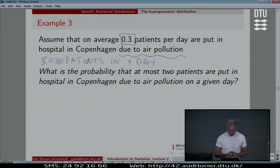Then having this model for this system, we can start playing around with the system. For instance, trying to look at probabilities that at most two patients are put into hospitals due to those type of patients here we are looking at. At most two patients are put into a hospital due to air pollution on a given day, on a random day, you could say. So how often will it happen? That's another way of putting the same question.